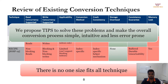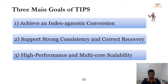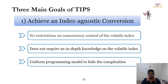To address this problem and with the goal to make the overall conversion process simple, we propose the TIPS framework. TIPS is designed with three main goals in mind. First, we strive to achieve an index-agnostic conversion and support strong consistency and correct recovery, without trading off the performance or multicore scalability of the volatile index. We aim not to place any restrictions on the concurrency control of the volatile index, and to make the overall conversion process simple and generic without requiring any index-specific knowledge, hiding the complexities of NVMM programming under the hood.